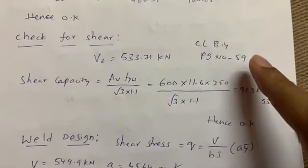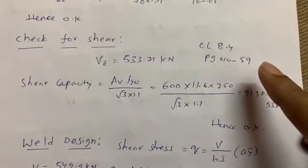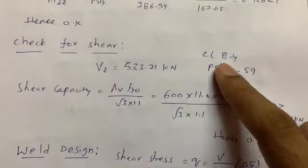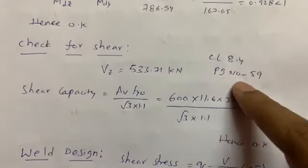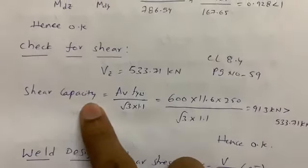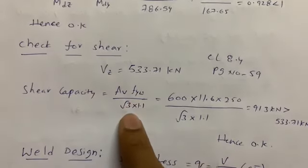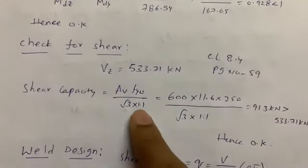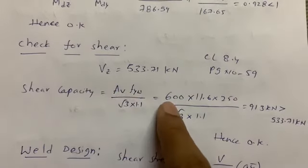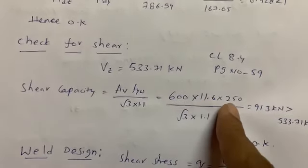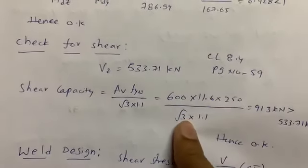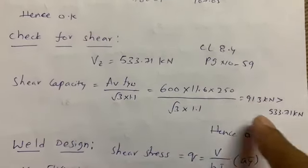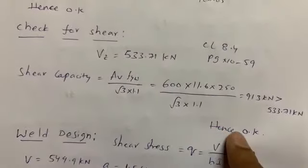For the shear capacity check (clause 8.4, page 59): Vd = Av × fy,w / (√3 × γm0), where Av = 600 × 11.6 mm² (web area), fy = 250 MPa, giving Vd = 913 kN. This is greater than the design shear force Vz calculated earlier — satisfied.